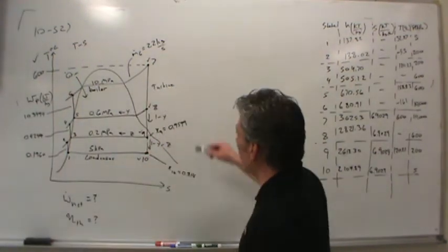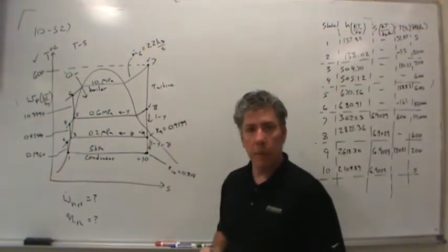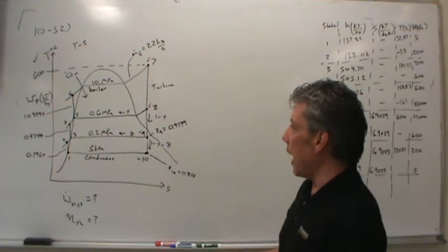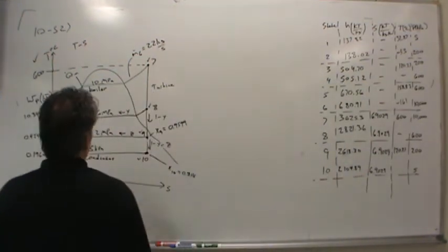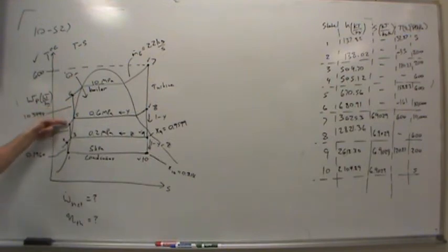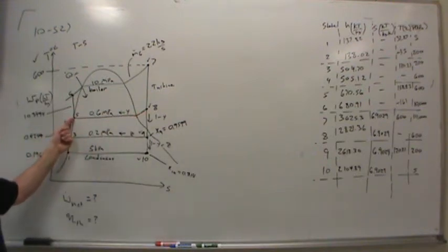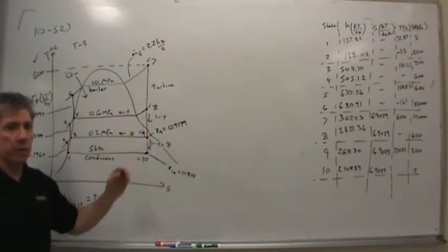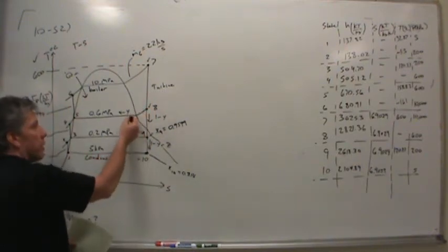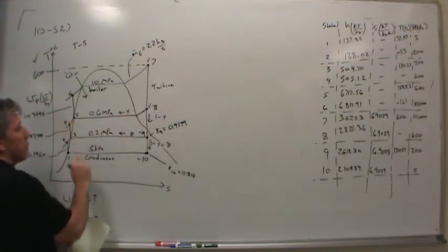We don't know y and we don't know z — the mass fractions being pulled off as bleed steam. Think about it this way: if you didn't pull off any bleed steam, you couldn't raise state 4 to the saturated state. The more steam you pull off, the closer you can get to state 5. We just want to raise the water from the compressed liquid region to the saturated liquid region, so we need the right y fraction just to pull state 4 to state 5.